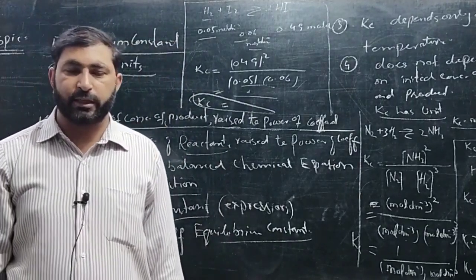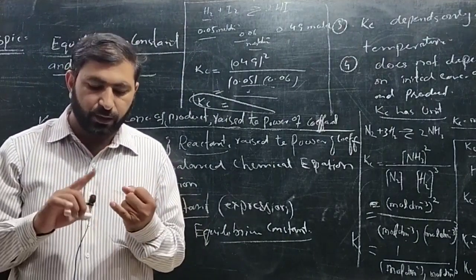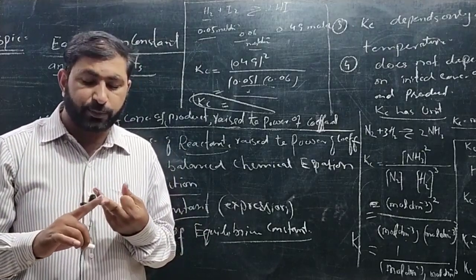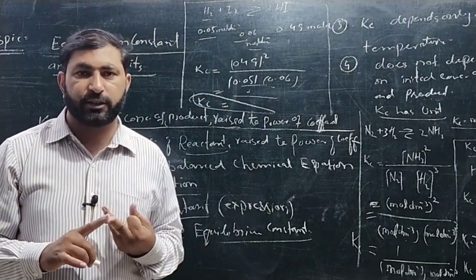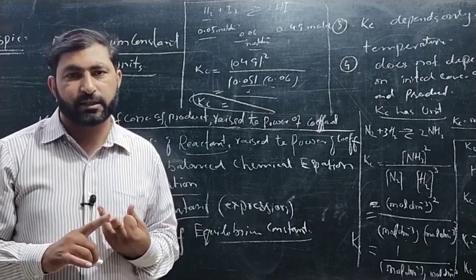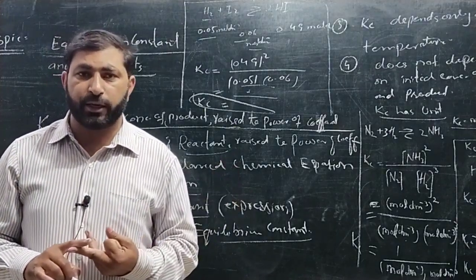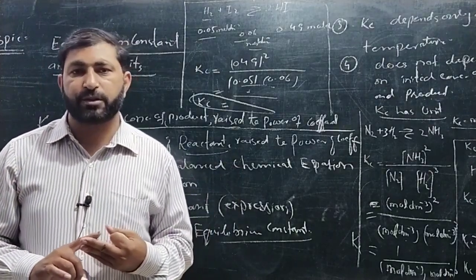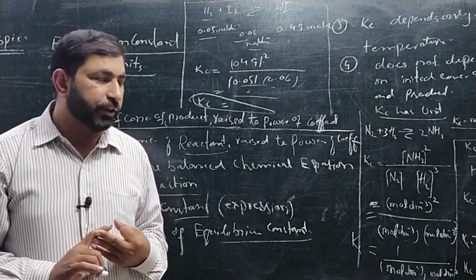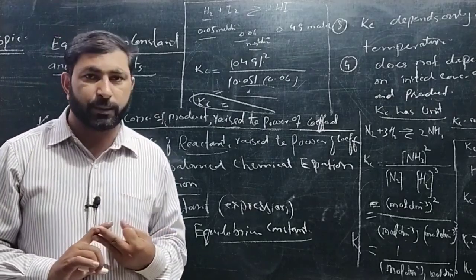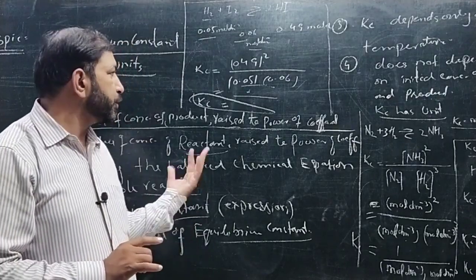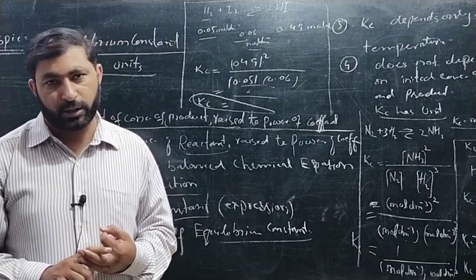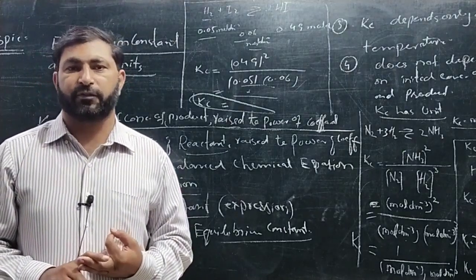So students, in today's lecture we studied the equilibrium constant, its units, and how to calculate numerical values by writing the expression and substituting concentrations. Problem 9.1 has been solved here. You should also solve problem 9.2 and the exercise questions at home. Whatever we learned today, make sure to write it down and memorize it. That's all for today.